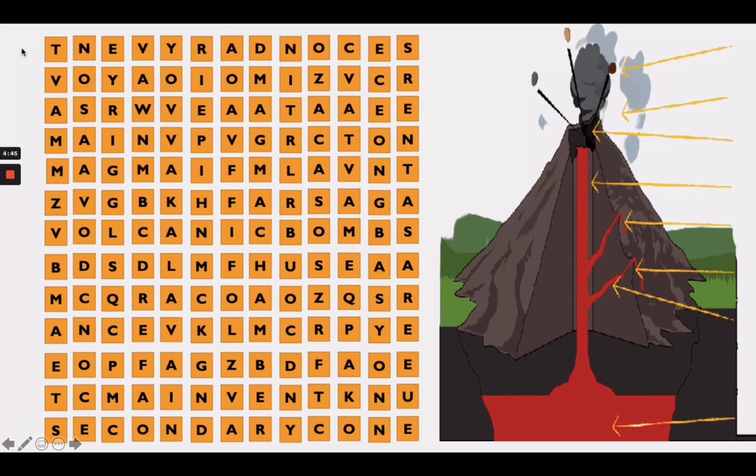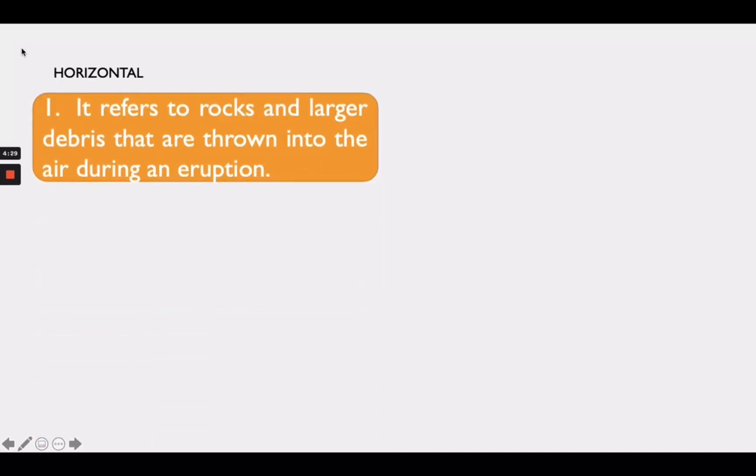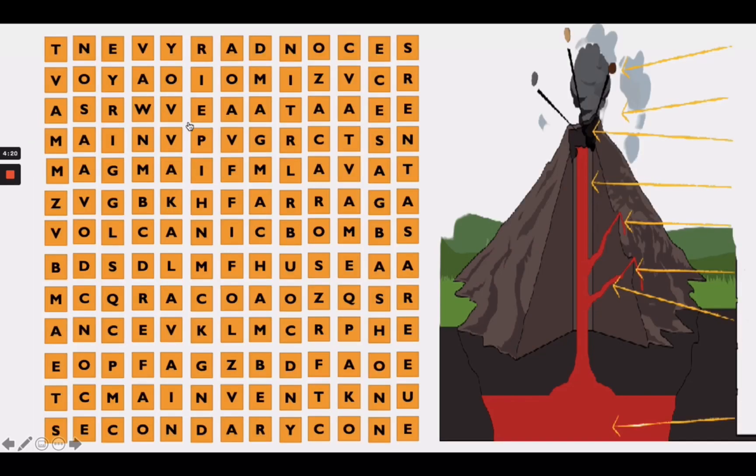What can you see are jumbled letters. I want you to find different parts of a volcano based on the given definitions. Let's start! For our clue, you can find the answers horizontally. Number one: it refers to rocks and larger debris that are thrown into the air during an eruption. What do you think is the answer? Great job! It's volcanic bombs.